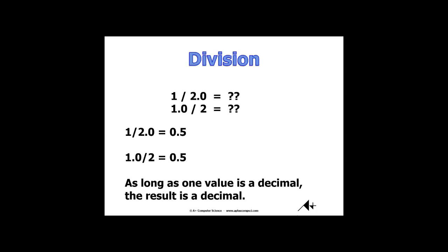Here we've spiced it up a little bit. We have one piece is decimal and the other piece is integer. If any part of the expression when you're doing division has decimal values, your result is going to be a decimal value.